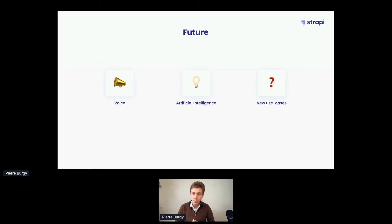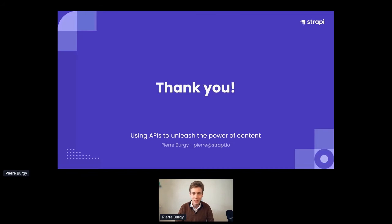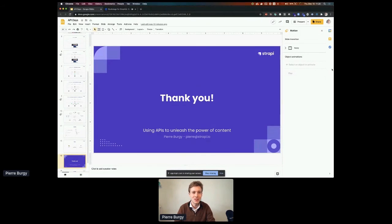APIs are definitely the relationship layer of content — that's for sure. It's also only the beginning: in the future, content will also be about voice, artificial intelligence, and new use cases we haven't invented yet. That's really what APIs are about in this new content world. That's it for today, and I'm happy to answer all of your questions.